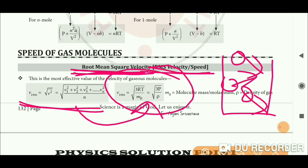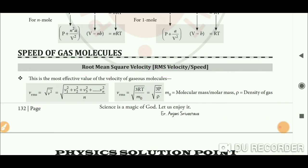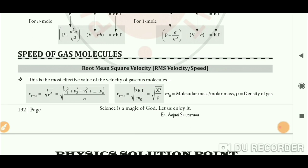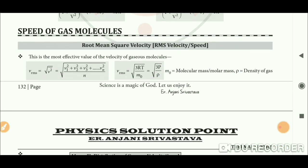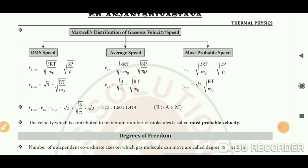Mathematically, after deriving theoretically, the RMS speed equals the square root of (3RT/M₀), where M₀ is the molecular mass (mass of one mole). This can also be written as the square root of (3P/ρ) using PV = nRT converted to density form, where ρ is density.